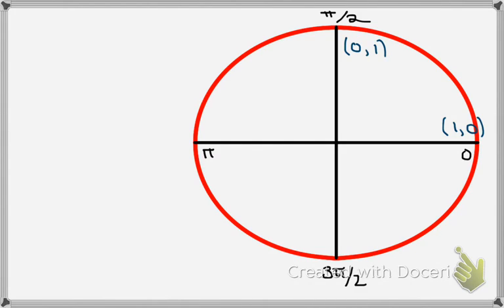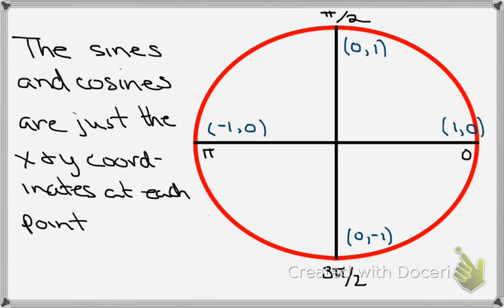Similarly, at the angle pi over 2, the x-coordinate is 0 and the y-coordinate is 1, so cosine of pi over 2 is 0 and sine of pi over 2 is 1. At the angle pi, x is minus 1 and y is 0, so cosine of pi is minus 1 and sine of pi is 0. And at 3 pi over 2, x is 0 and y is minus 1, giving cosine of 3 pi over 2 equal to 0 and sine of 3 pi over 2 equal to minus 1. In general, sines and cosines are just the x and y coordinates at each point on the circle.